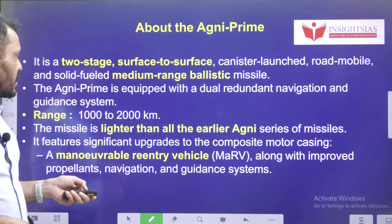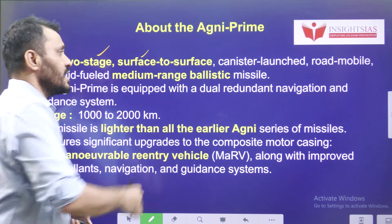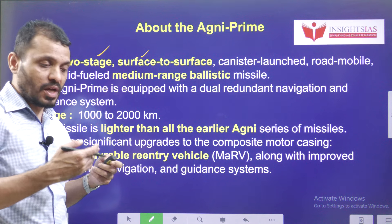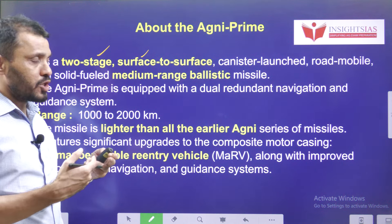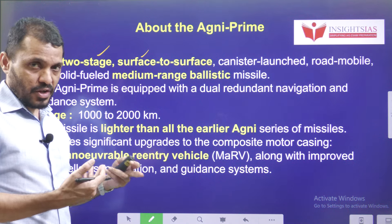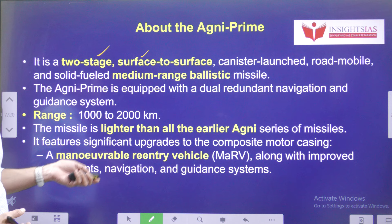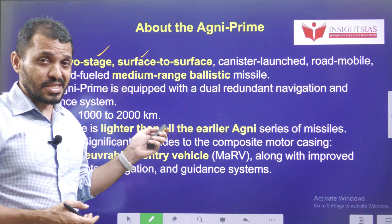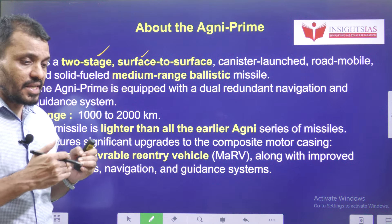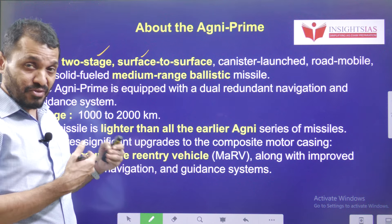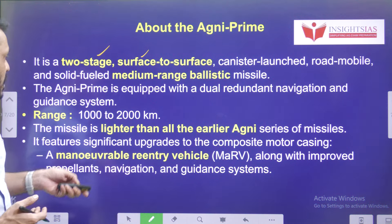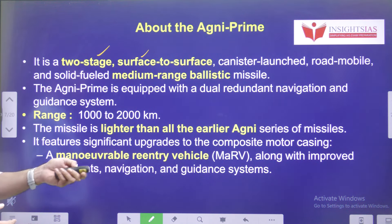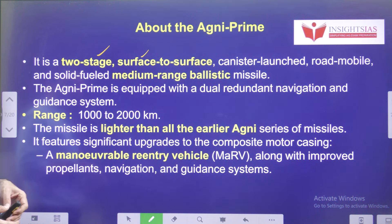The Agni Prime missile is a two-stage, surface-to-surface, canister-launched missile. That means it can be launched from moving stations — such as a train or any vehicle. It is a solid fuel missile and its range is medium range, around 1000 to 2000 kilometers. It can easily hit targets in Pakistan, but with this missile we cannot hit targets in China. The Agni Prime is equipped with a dual redundant navigation and guidance system.